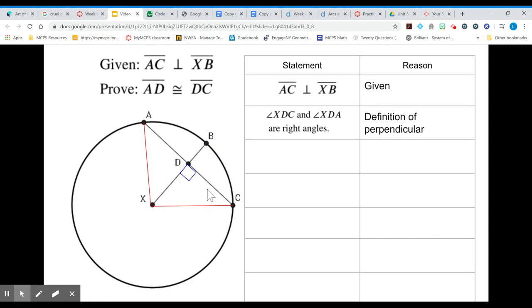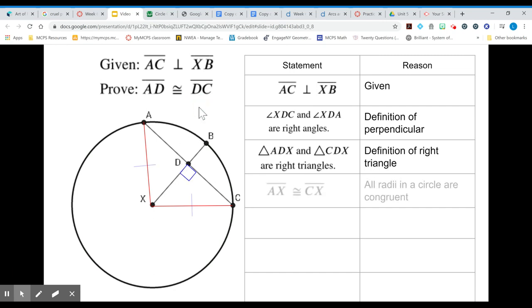We can then draw triangles because everything comes back to triangles and we're probably going to use Pythag. So we know that they are both right triangles by the definition of a right triangle because they both have a right angle in them.